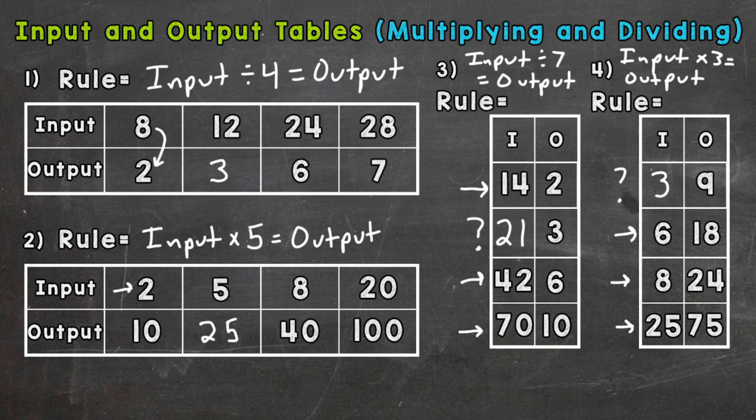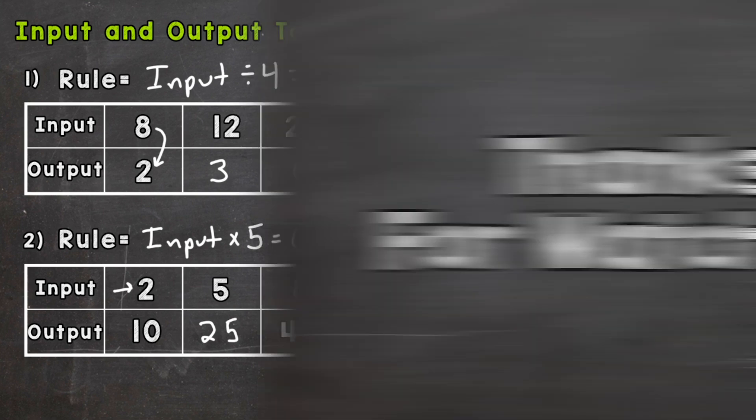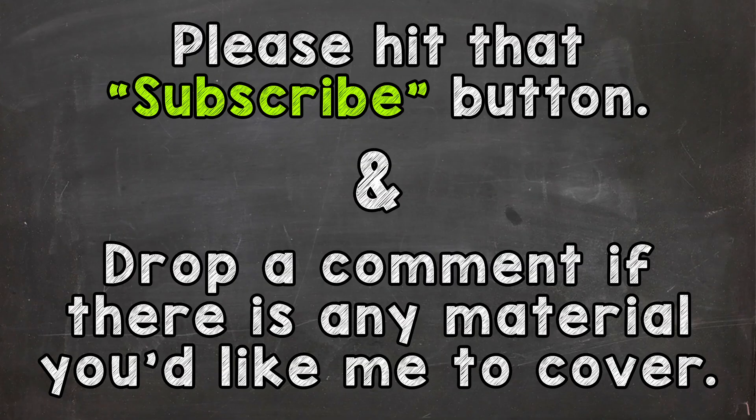So there you have it. There are some examples for input and output tables that involve multiplying and dividing. Hopefully that helped. Thanks so much for watching. Until next time. Peace.